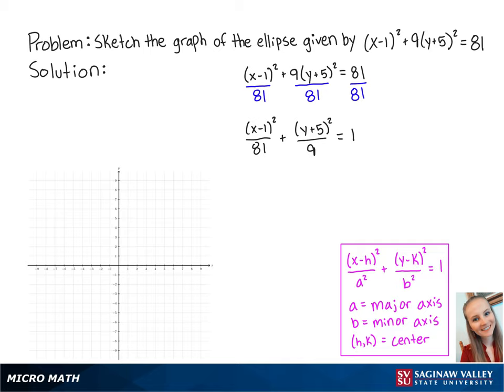The last step is to rewrite both of the denominators so that we have (x - 1)² over 9 squared plus (y + 5)² over 3 squared equals 1.